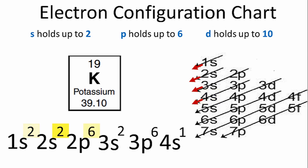2 plus 2 plus 6 plus 2 plus 6 plus 1 gives us a total of 19 electrons, the number of electrons we have for the potassium atom.